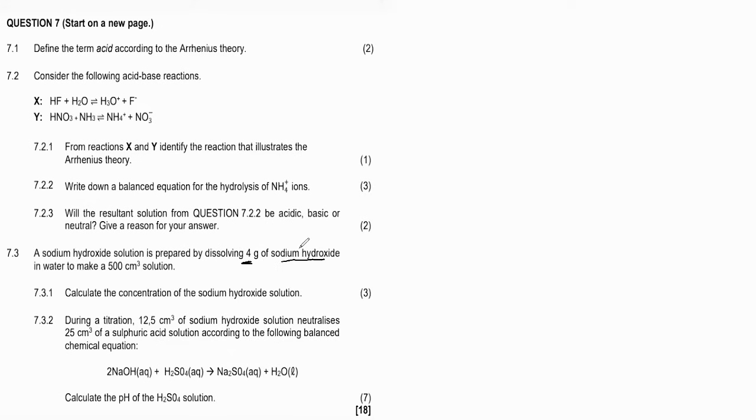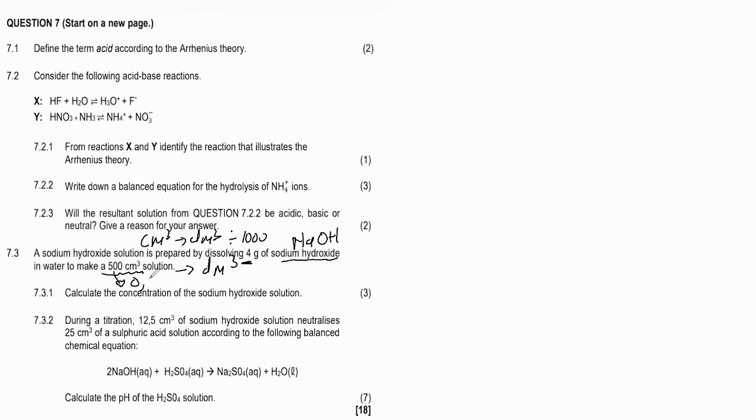7.3 says: a sodium hydroxide (NaOH) solution is prepared by dissolving 4 grams of sodium hydroxide in water to make 500 cm³ of solution. We are given the volume in cm³, but we want it in dm³. To convert from cm³ to dm³, divide by 1000 — so 500 cm³ = 0.5 dm³.